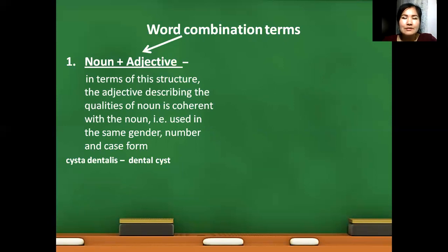Look at the examples: cista dentalis. Cista is a feminine noun. Dentalis, adjective, is also used in feminine gender form. Same is happening with next examples: tussis chronica, inflammatio purulenta.